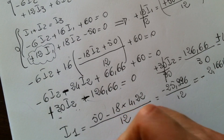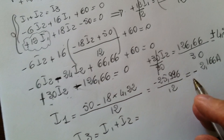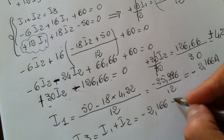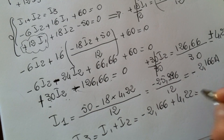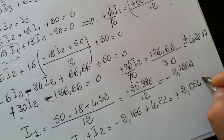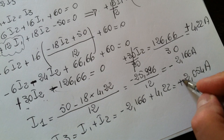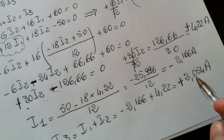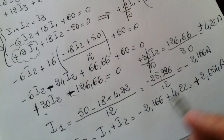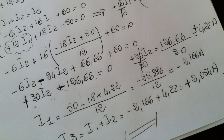Now we have I3, which is equal to I1 plus I2. So it's minus 2.166 plus 4.22, which equals plus 2.05 amps. This is the module, and the plus sign states that we chose the right direction of the current. We solved the exercise because we calculated the three currents and their directions.